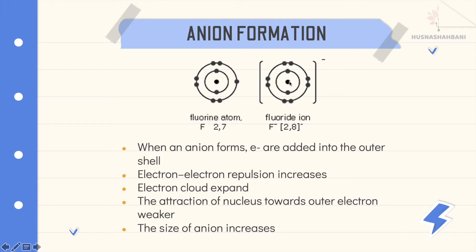The number of protons in the nucleus remains the same, but there are now more electrons to attract. That's why the attraction of the nucleus towards the outer electrons is weaker, and the size of the anion increases.